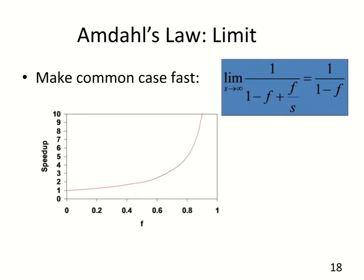Taking the limit of Amdahl's Law as s approaches infinity, the speedup simplifies to 1/(1 - f). Plotting this with f on the x-axis from 0 to 1, the speedup is trivial and almost useless for small values of f. But as f approaches 1, the speedup goes up exponentially towards infinity. This reiterates that we want to be in the range on the right-hand side where the optimization is broadly applicable to a large fraction of the program. If f is small, the benefit will be marginal at best.